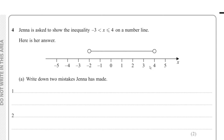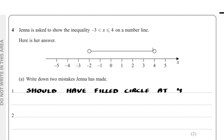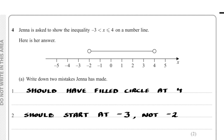Question 4: Jenna is asked to show the inequality -3 < x ≤ 4 on a number line. Part A: Write down two mistakes Jenna has made. First, she should have a filled circle at 4 to show less than or equal to 4, but she has an open circle showing less than 4. Second, she should start at -3 but she starts at -2.